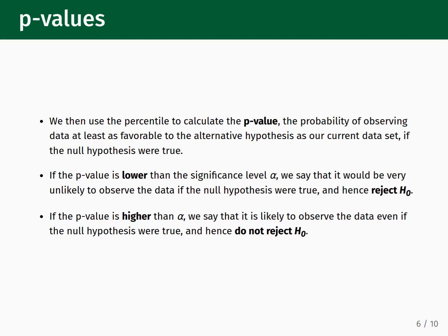Although we calculated a p-value for the gender discrimination case study, let's now take the time to more carefully define what we mean by this term. A p-value is the probability of observing data at least as favorable to the alternative hypothesis as what we have in our current dataset, if the null hypothesis were true. If the p-value is found to be lower than the significance level alpha, we conclude that it would be very unlikely to observe our data if the null hypothesis were true, and hence we should reject the null hypothesis in favor of the alternative. On the other hand, if the p-value is higher than alpha, we conclude that it is likely we would observe the data even if the null hypothesis were true, and hence we do not have sufficient evidence to reject the null hypothesis.